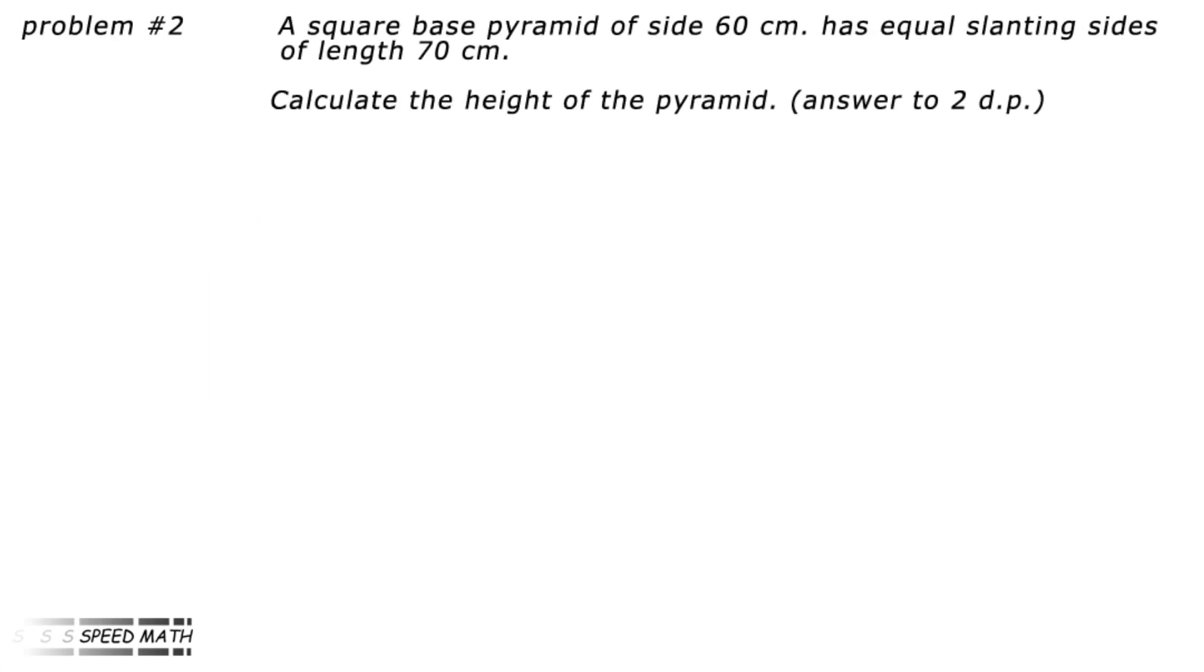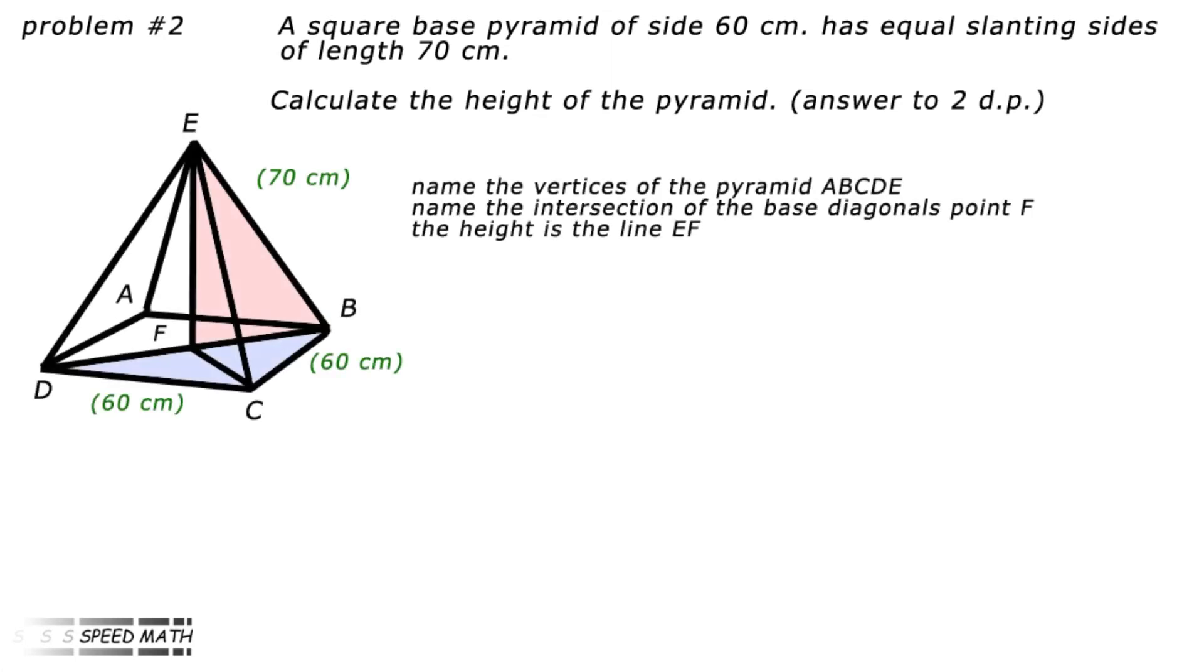Problem number two. A square base pyramid of size 60 centimetres has equal slanting sides of length 70 centimetres. Calculate the height of the pyramid. Answer to two decimal places. First, name the vertices of the pyramid A, B, C, D, E. Name the intersection of the base diagonals, point F. The height is the line EF.